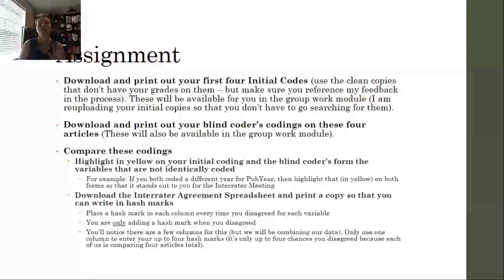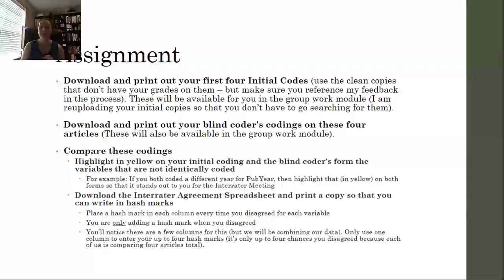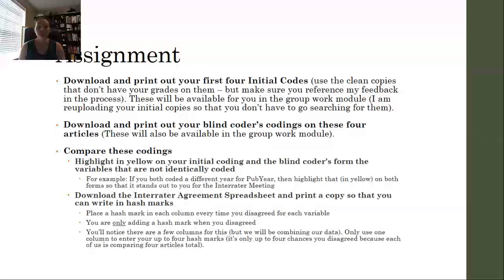Secondly, in this process and also individually, download and print a copy of the Inter-rater Agreement Spreadsheet Template so that you can handwrite in hash marks as you compare your codings. Place a hash mark in each column of every variable every time you disagreed. You're only going to add a hash mark when you disagreed on something. You'll notice there are a few columns, but you're only going to use one column, entering up to four hash marks within it.